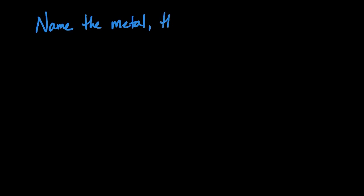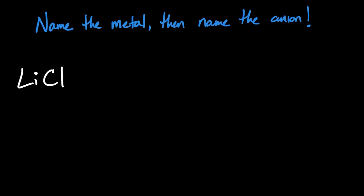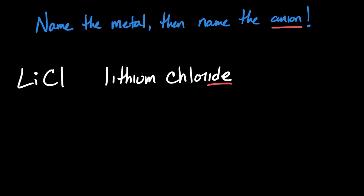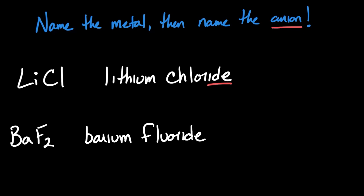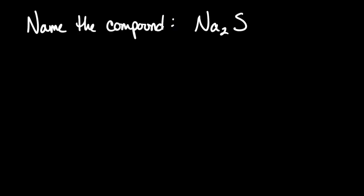If we're dealing with a metal in the yes category, our naming rules are very simple — just name the metal and then name the anion. For example, for LiCl, lithium only forms a +1 charge, so we name the metal lithium, and then name Cl as the anion: chloride. Notice the name change from chlorine to chloride to designate that it's an anion. For BaF2, we name the metal barium, and the anion fluoride — again an ending change from fluorine to fluoride.